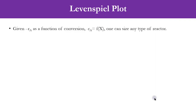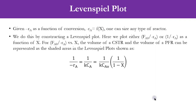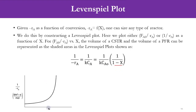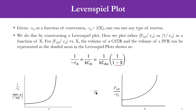The starting point is that minus rA is a function of conversion, and one can size any type of reactor. We take the reciprocal of the rate equation: minus rA equals k·CA becomes 1 over minus rA equals 1 over k·CA, and since CA equals CA0·(1 minus X), that becomes 1 over [k·CA0·(1 minus X)]. There are two plots: one is conversion X versus 1 over minus rA, and the second is X versus FA0 over minus rA. Both plots are the same in trend — the only difference is the FA0 factor on the Y-axis.